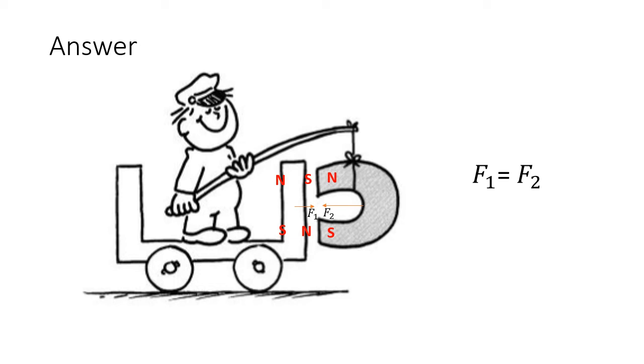Similarly, F2 is an external force to the magnet, but it is not an external force to the system. Since no external force is applied to the system, the system will remain at rest according to Newton's first law.